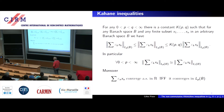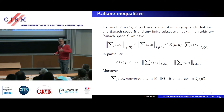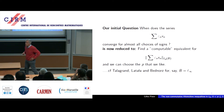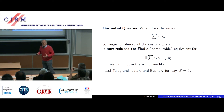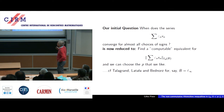The Kahane inequalities express a very surprising phenomenon generalizing the Khintchine phenomenon: the series converges almost surely in an arbitrary Banach space B if and only if they converge in LP(B) for any finite P — for some P or for all P, it's the same. So the problem reduces to an inequality problem, and because of these Kahane inequalities, we can actually choose P for the calculation.